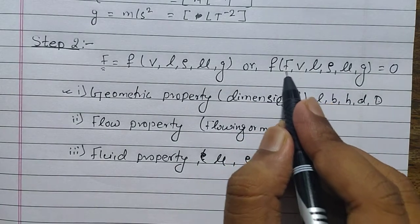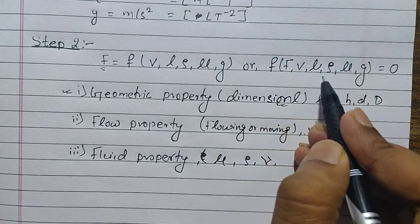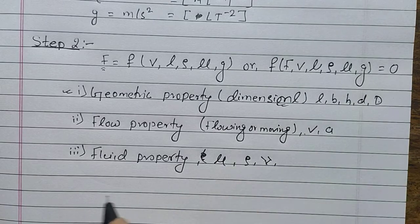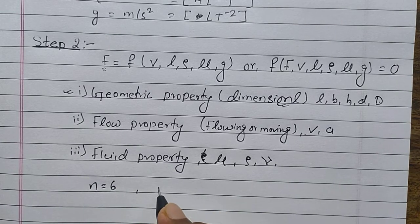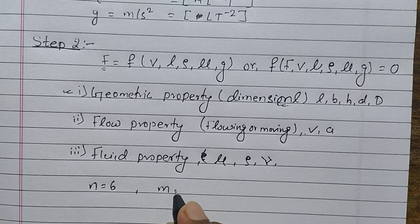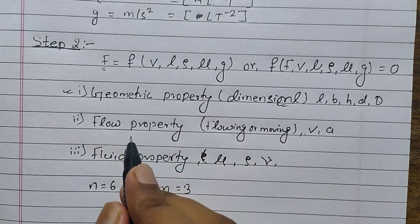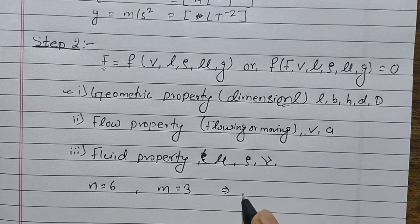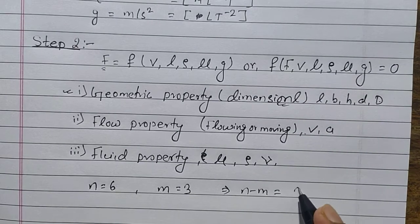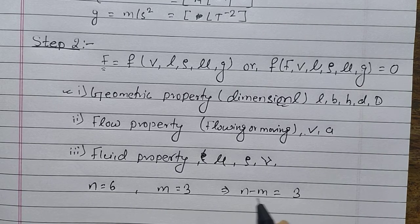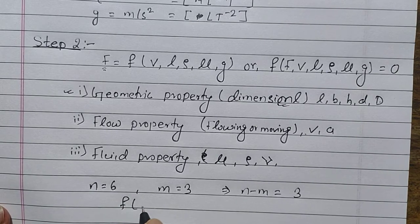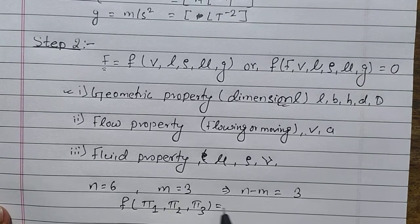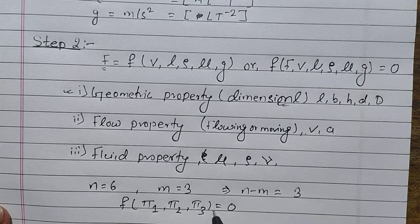Now let's count the total number of variables. We have 6 variables total, so n = 6. The number of repeating variables m is taken as 3, based on geometric, flow, and fluid properties. Subtracting n − m gives 3. This means our Buckingham Pi theorem function will be written in terms of π₁, π₂, π₃ = 0. If it were 4, it would go up to π₄.